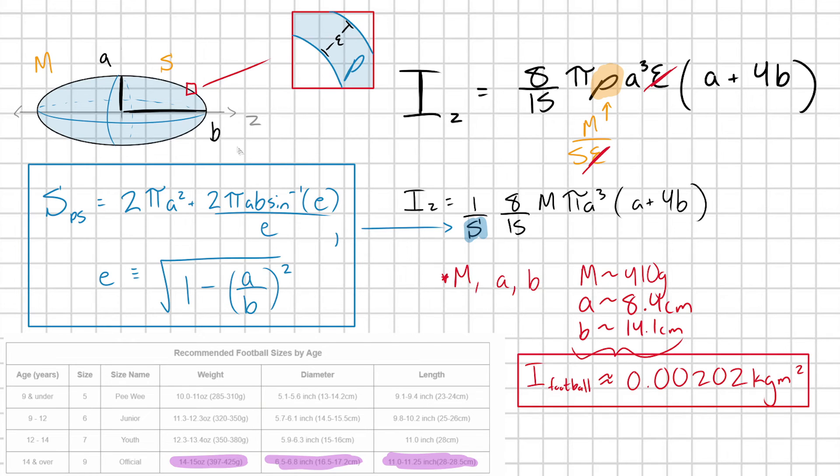And there we go. Now I was curious to see how effective our prolate spheroid approximation of this football was to the actual moment of inertia of a real football. I did manage to find one source, which I'm putting in the description also, that referenced someone else measuring the moment of inertia of a football. I_measured was found to be 0.00194 kilogram meters squared.